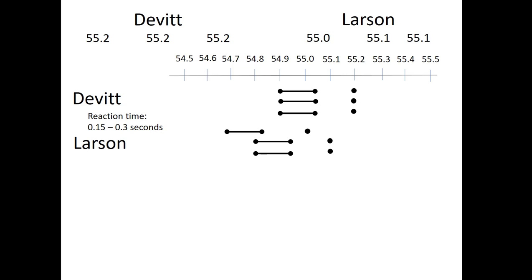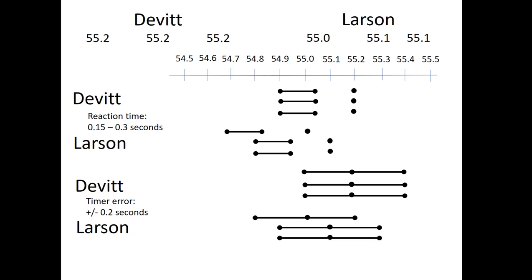And the situation becomes even less clear when you look at the error in the timer itself. Once again, here are Devitt's times, and this time you need to remember that the timer error can be plus or minus 0.2 seconds. So in fact we have to draw an interval around those times of 0.2 seconds each way. Similarly, for Larson, we have to draw intervals of 0.2 seconds each way. And oh my goodness, look at this huge overlap. Although it looks like Larson has finished in less time, there's quite a big range of possibilities in here that actually puts Devitt ahead.